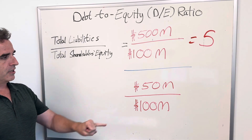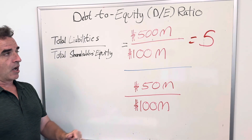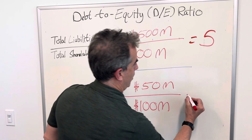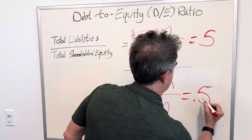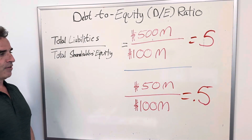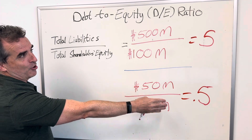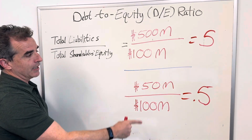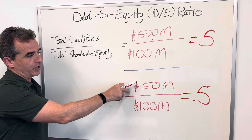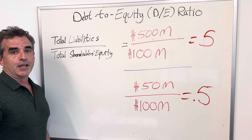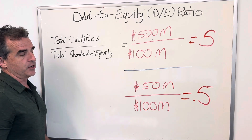Now you might want to look at the next organization. It's got $50 million in debt versus $100 million in equity. In this situation, you're looking at a ratio of 0.5 — a ratio completely different from the first, with less leverage in this organization. Therefore, it's a lot easier for this organization to facilitate and pay off its interest and its debt as things go wrong or during a downturn in the economy versus the first organization.